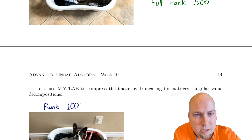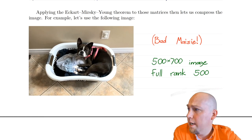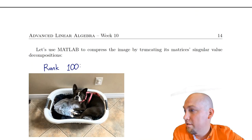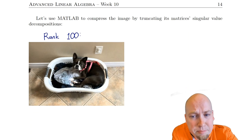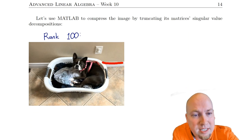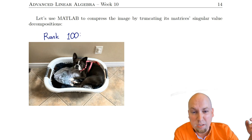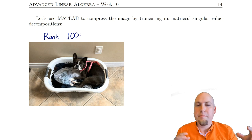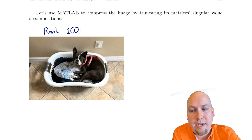Scrolling back up to the original image for comparison — the rank-100 approximation is pretty good. Truncating down to just 20% of the singular values, it still looks quite good. If you look closely, especially on flat spots, you can see some graininess, but overall you certainly get the shape of the image and most of the detail from just those 100 out of 500 singular values.